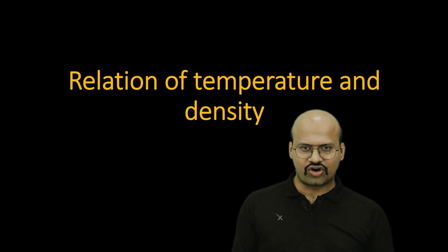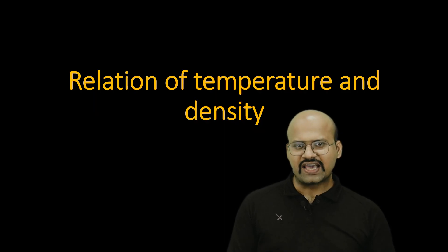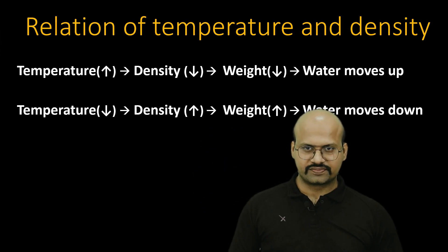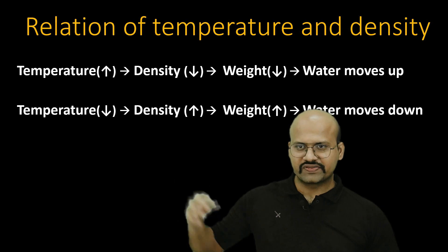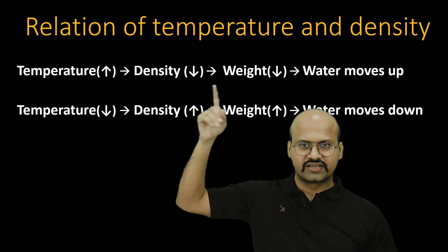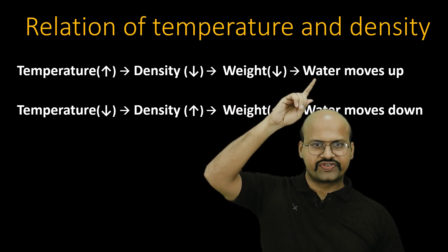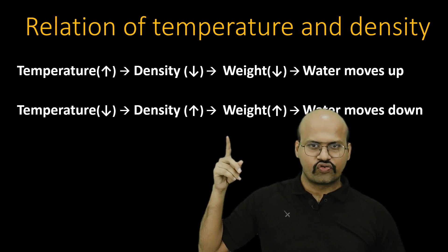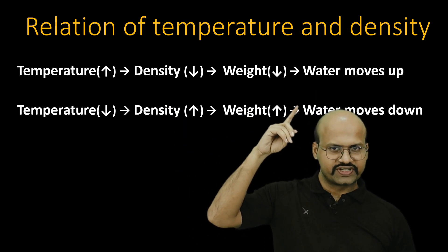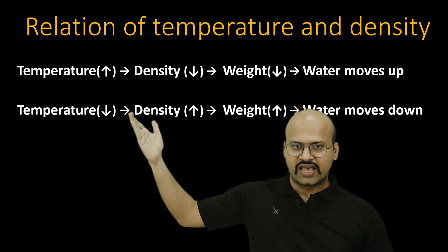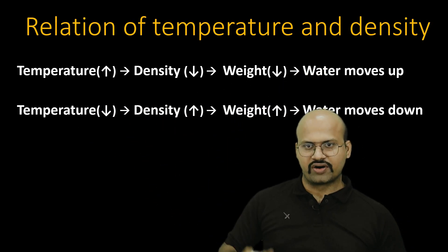Temperature mainly helps in thermohaline circulation by changing the density. When temperature increases, density decreases, weight decreases, and water moves up. When temperature decreases, density increases, weight increases, and water moves down. This is the relationship between temperature and density, and this is how it makes water move up or down.